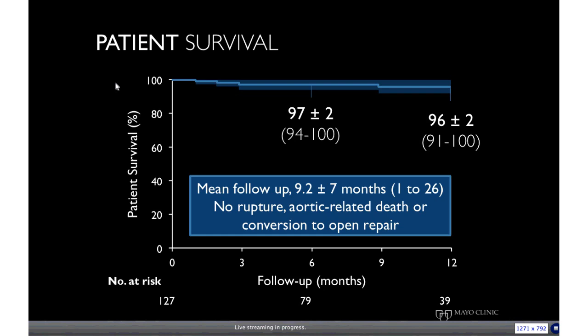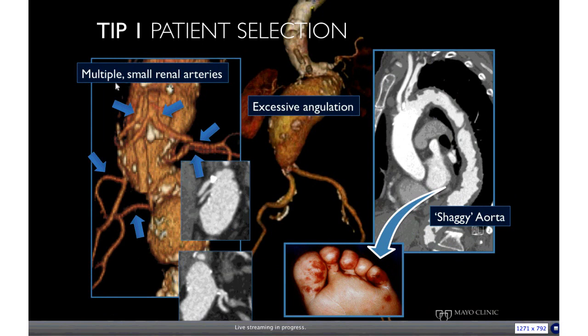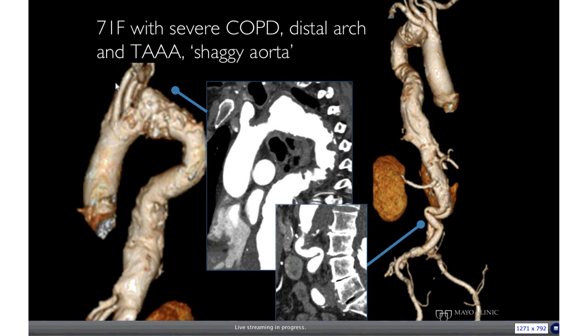The first tip is that patient selection plays a critical role in technical success and outcomes. One needs to learn how to say no to indicating this procedure. These are some examples of patients where the procedure may be feasible but is fraught with higher technical failure because of small or multiple renal arteries, early bifurcation of the renal arteries, excessive angulation, or a prohibitive amount of atherosclerotic debris within the thoracic aorta. This patient was referred for endovascular thoracoabdominal repair, but given the angulated arch, debris, and iliac tortuosity, they were denied repair due to risk of stroke, paraplegia, and dialysis.